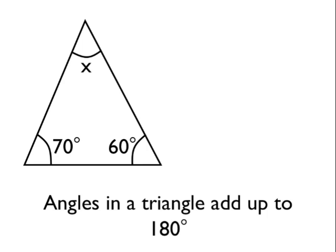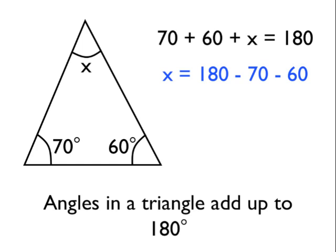So we know if we do 70, add 60, add x, that it must equal 180. Another way of thinking of that would be to say, start with that 180 degrees, which is the total, take away the 70, take away the 60, and what would be left with would be angle x.